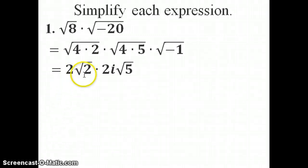So I've got 2 square root of 2, which is my square root of 8. 2i square root of 5, which is my square root of negative 20. Okay, remember the negative 1 turns into an i.